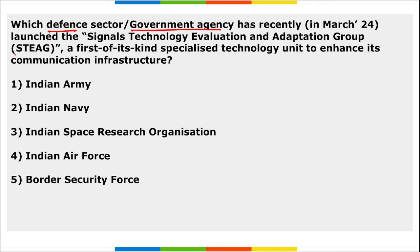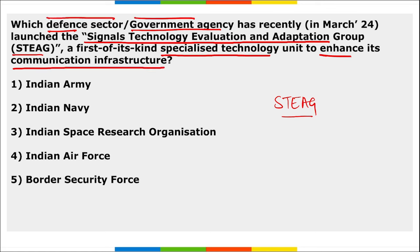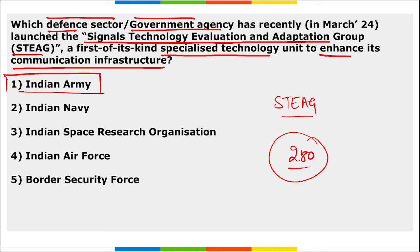The Indian Army launched STEAG — Signals Technology Evaluation and Adaption Group — a first-of-its-kind specialized technology unit to enhance communication infrastructure. This unit, with a strength of around 280 personnel, will operate under the Signals Directorate, be based in New Delhi, and be headed by a Colonel-rank officer from the Corps of Signals. The Indian Army transformed 21 Signals groups with a fresh mandate as STEAG.